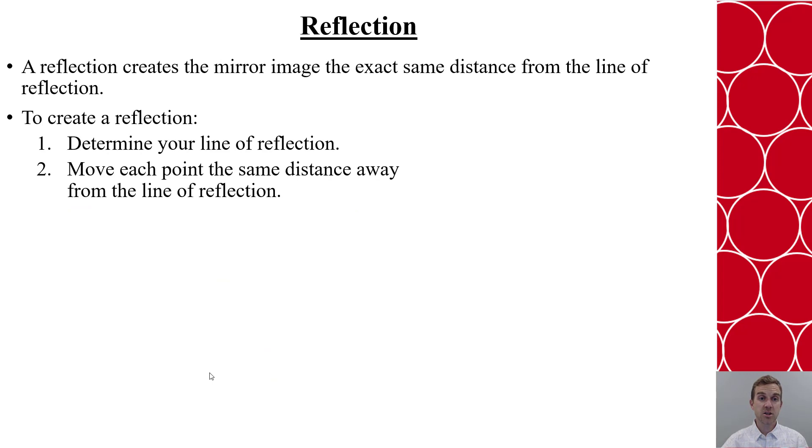With a reflection, we're going to create a mirror image that's the exact same distance from the line of reflection. To do this, we're going to determine our line of reflection and then move each point the same distance away from the line of reflection.